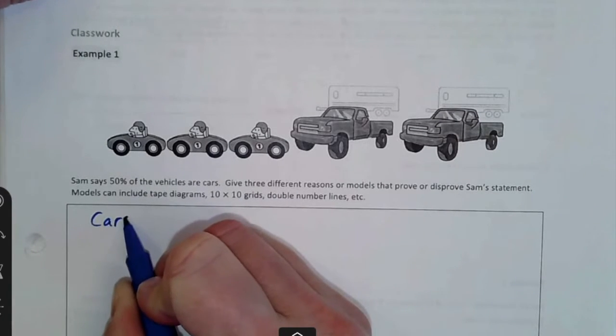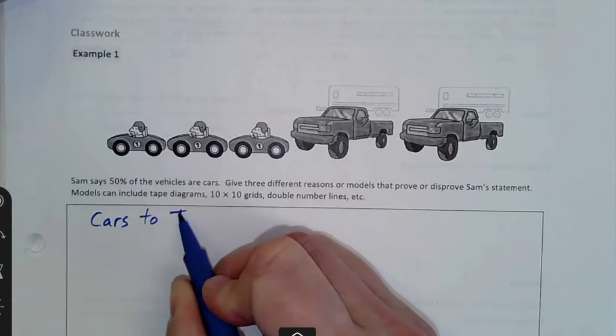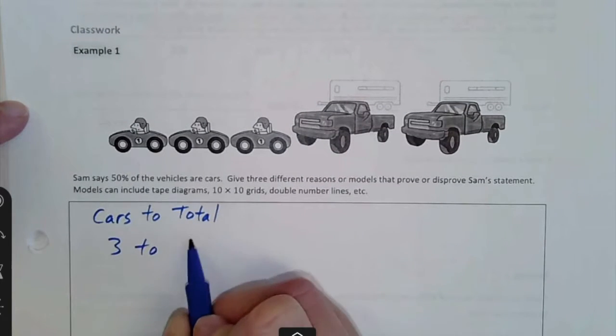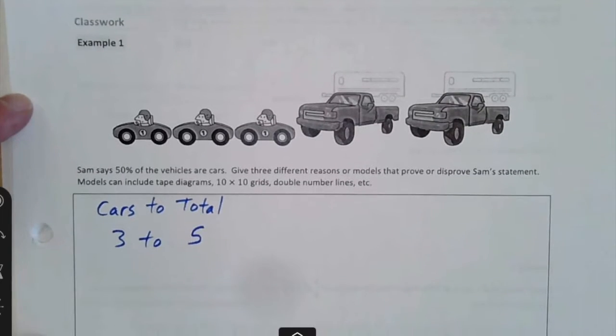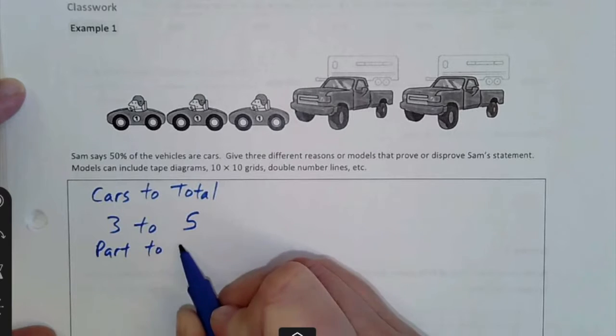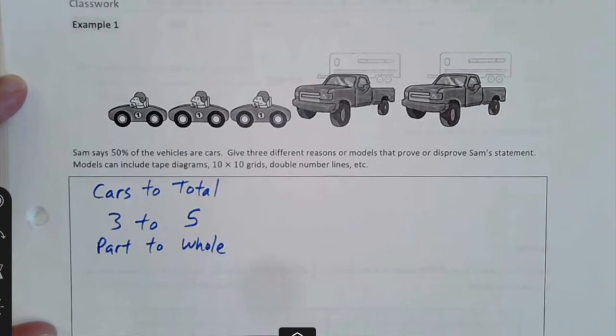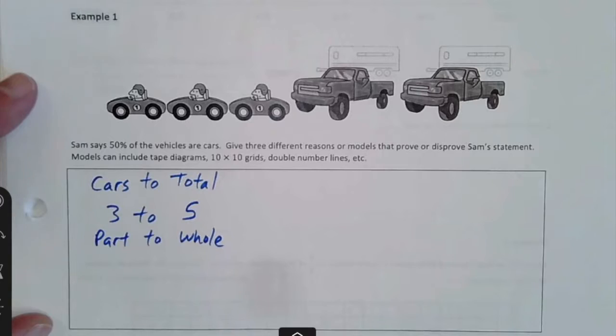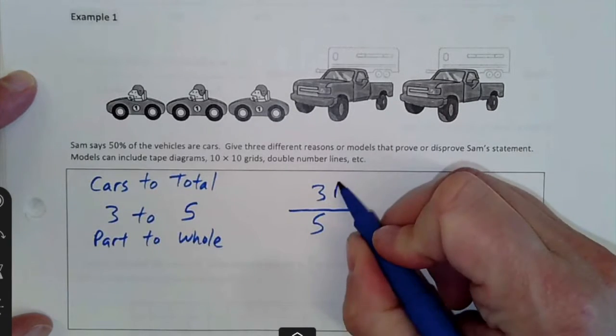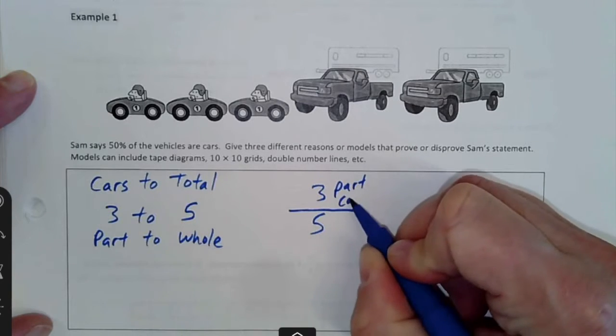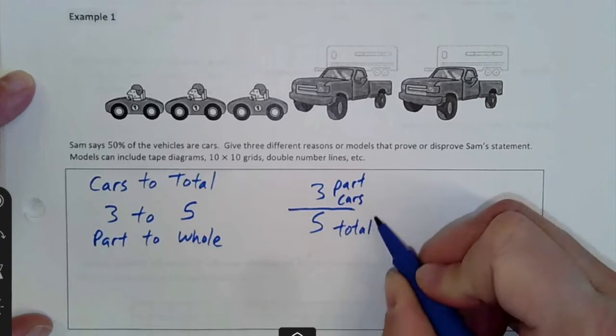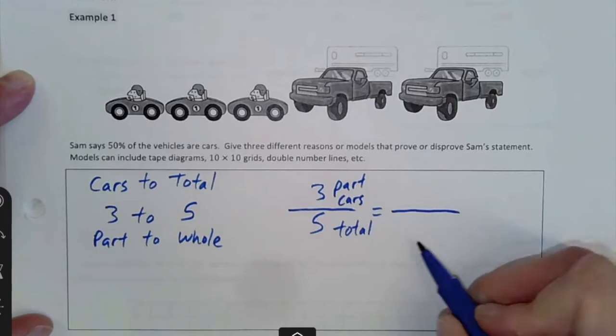If I write cars to total, then I have three to five, three cars to the five total vehicles. We call this a part-to-whole ratio. If I put it like a fraction, three to five, three is the part that's cars, and five is how many total vehicles there are. Could I make this a fraction out of 100? Sure.